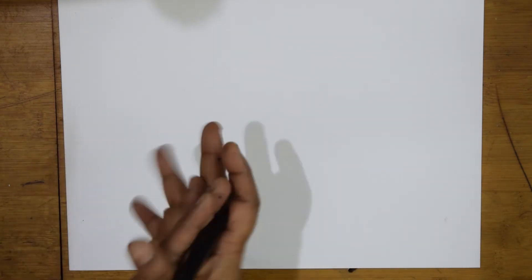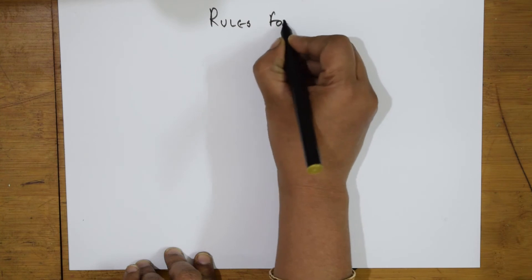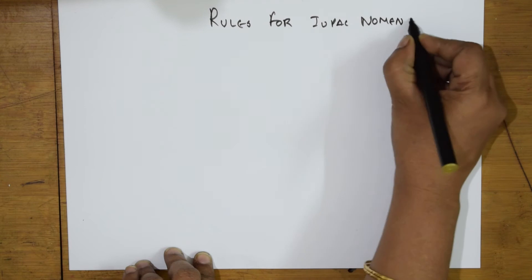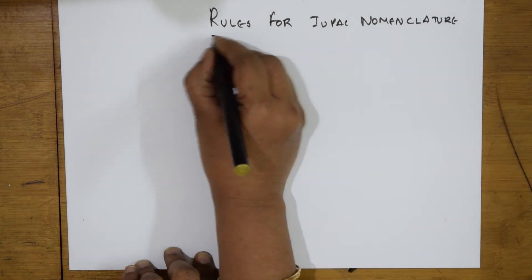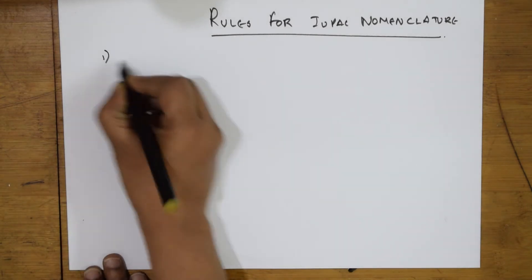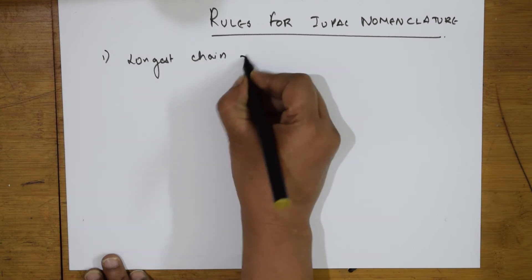Now, what are the rules for IUPAC nomenclature? In the rules for IUPAC nomenclature, the first important thing you have to remember is the longest chain rule. Remember rule one: whenever you need to practice all these rules, then start applying them in examples. The first rule is the longest chain rule.